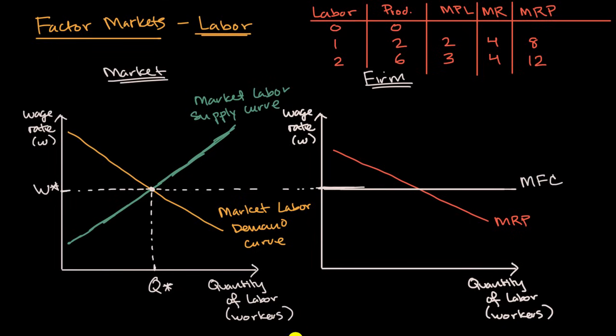And so you can imagine what is the rational quantity for this firm to hire. It would keep hiring all the way until the incremental revenue per unit of labor it gets is no longer higher than the incremental cost of that labor. And that would happen right over here. So this would tell us the rational quantity of labor. I'll call it Q star for the firm right over there.